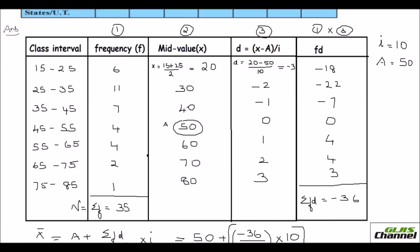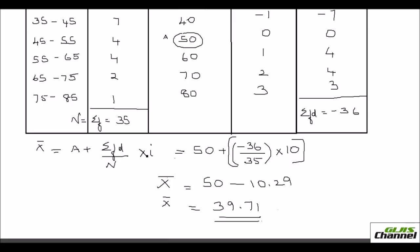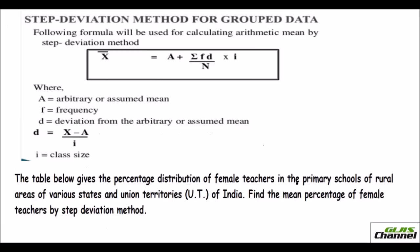That is all. The only difference in the step deviation method from the assumed mean method is that while calculating the deviation, you divide the deviation from the assumed value by the class size. The class size here is 10. This gives smaller numbers and makes calculation easier. But while doing the final calculation, you must multiply by the class size, since you already divided by it. Hope this is clear. The step deviation method is very easy — just note the formula and stick to the calculations carefully.